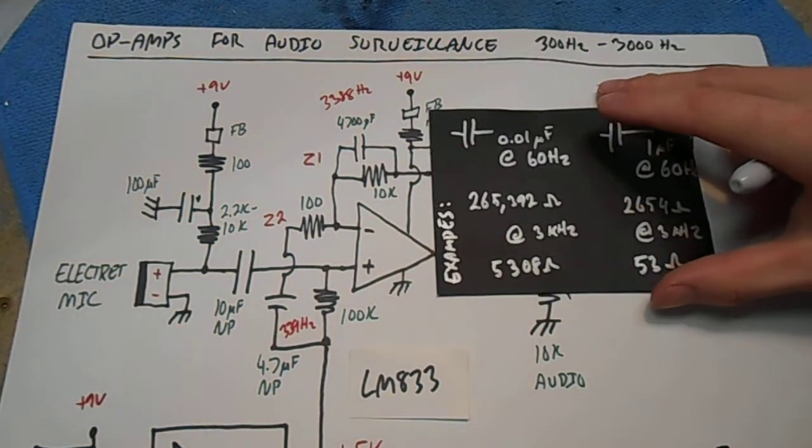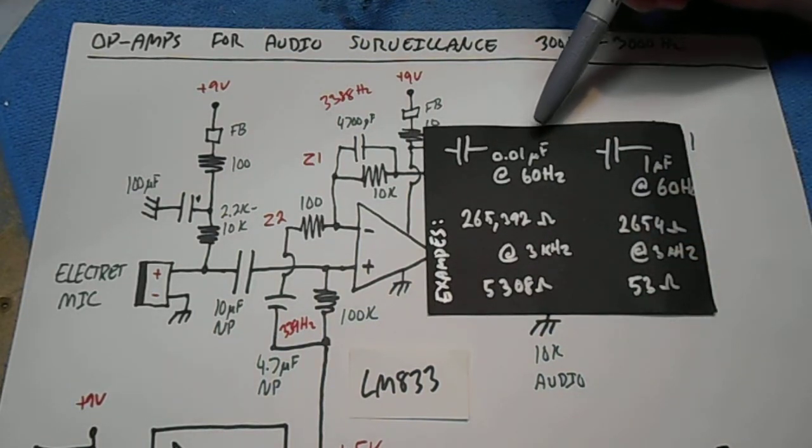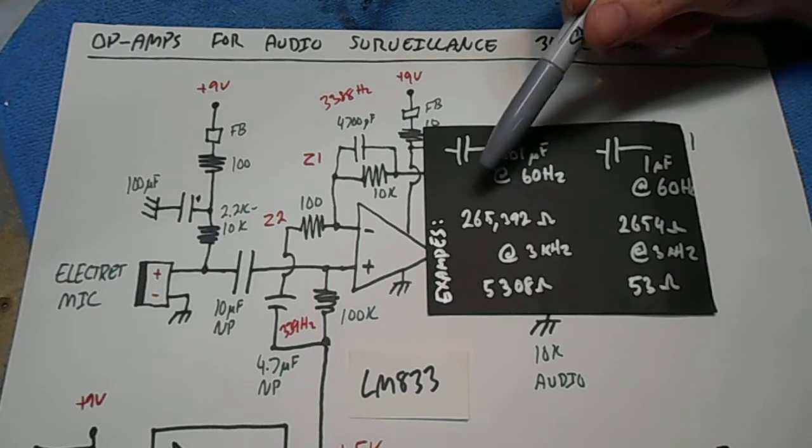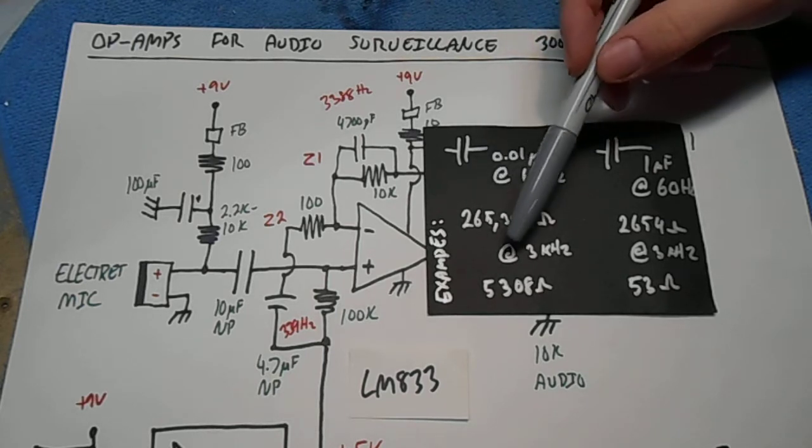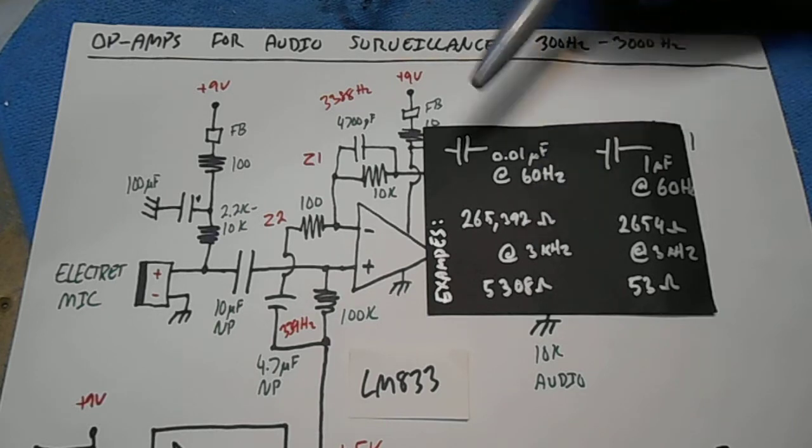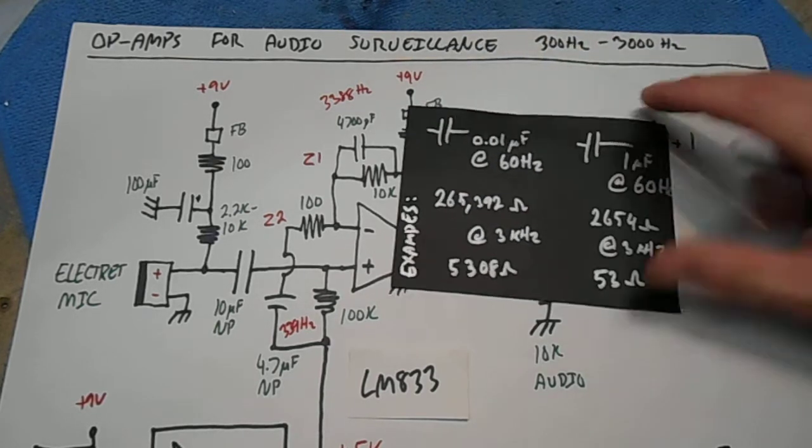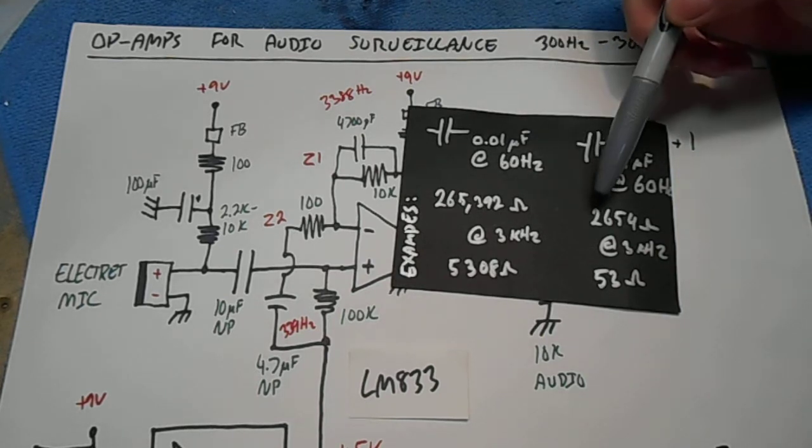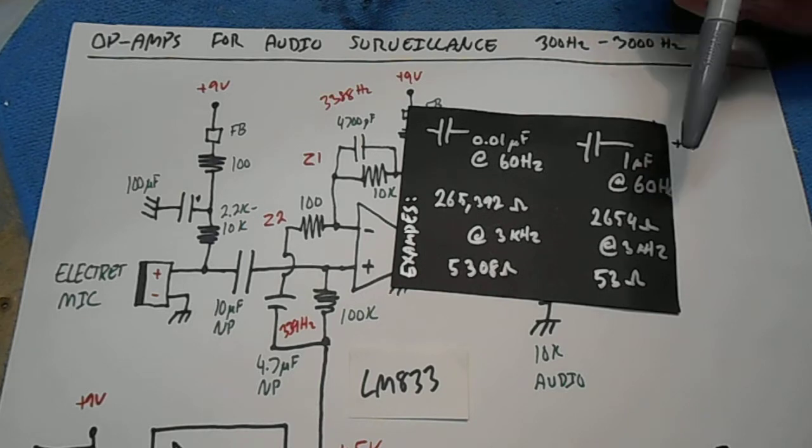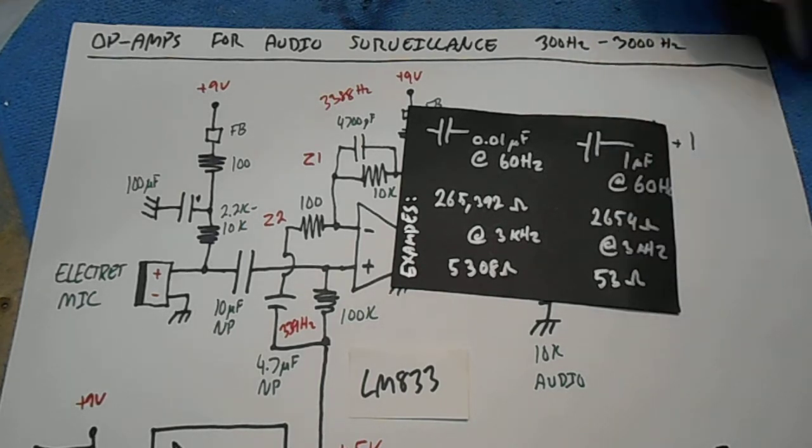Some example reactances. A 0.01 microfarad capacitor at 60 hertz will have a reactance of 265,392 ohms, while at 3,000 hertz it will have a reactance of 5,308 ohms. A 1 microfarad capacitor at 60 hertz will have 2,654 ohms of reactance, while at 3,000 hertz it will only have 53 ohms of reactance.